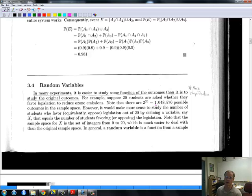He gives an example. If you've got 20 students asked whether they favor legislation to reduce ozone emissions, no one would ever think of it this way. But what it says is correct. There are therefore 2 to the 20th power, that is 1 million some possible outcomes. What does that mean? Well, it means that number one might have said yes, when number two said no, or number one might have said no, when number two said no, and then go on and enumerate all 20 students.